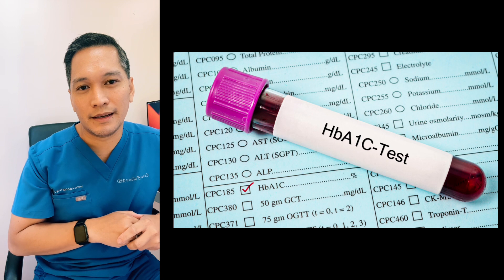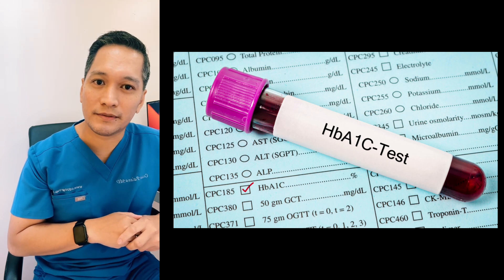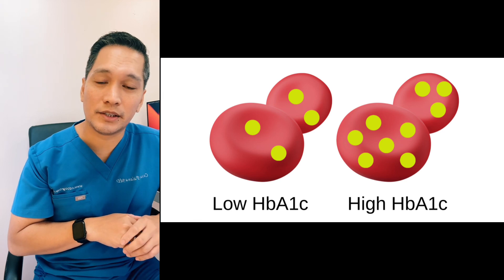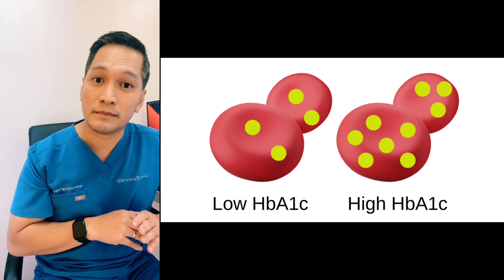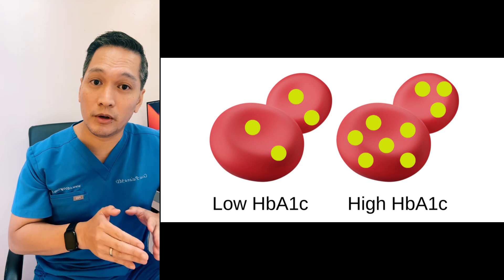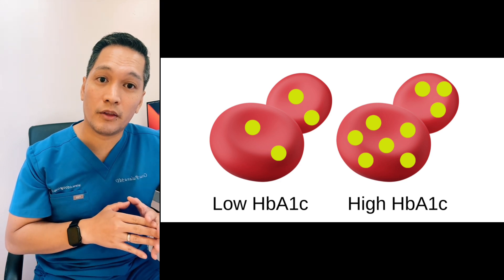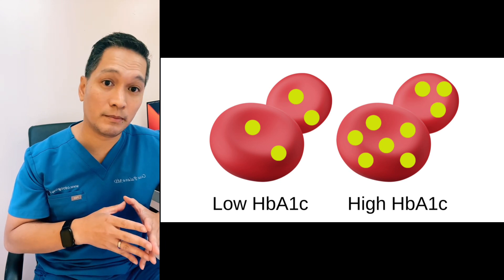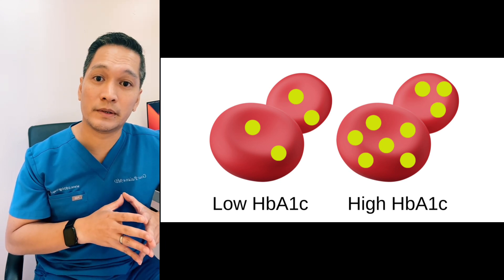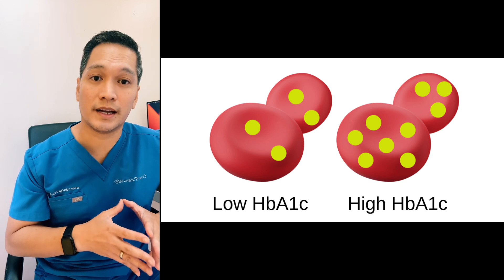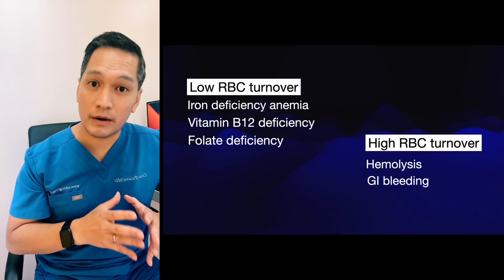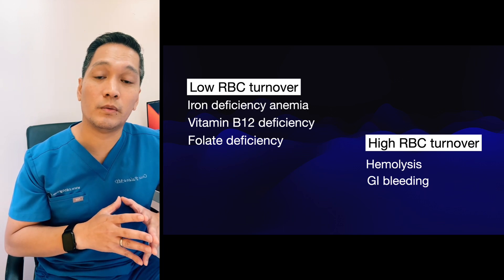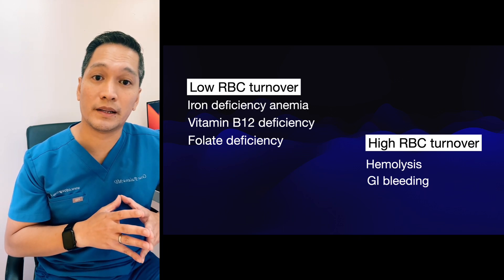Before discussing diabetes management, let's talk about hemoglobin A1c, since it's the most popular screening test for diabetes. A hemoglobin A1c test has limitations we must keep in mind. The A1c measures hemoglobin bound to glucose, so a low A1c indicates low glucose levels bound to hemoglobin, and a high A1c indicates more glucose attached to hemoglobin. However, in conditions that affect RBC lifespan, the A1c result will not correlate well with actual glucose levels.